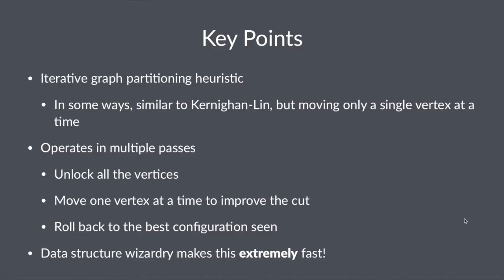In a lot of ways it's similar to Kernighan-Lin, but the difference is we're going to be moving only a single vertex at a time, rather than the pair that you saw in Kernighan-Lin. We're going to operate multiple passes. We'll unlock all the vertices, move one vertex at a time trying to improve the cut as much as we can, and then we'll roll back to the best configuration seen. That's going to happen in every pass. There's some absolute data structure wizardry that makes this extremely fast, much, much faster than Kernighan-Lin. Kernighan-Lin was big O of n cubed. If you're not careful with your data structures, Fiduccia-Mattheyses should be big O of n linear time for each pass.